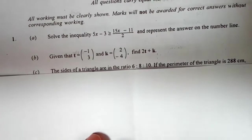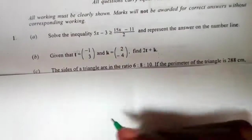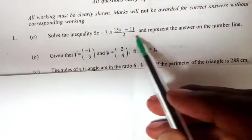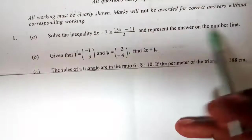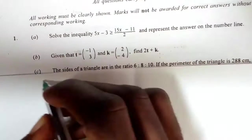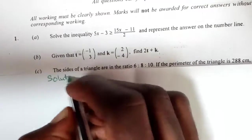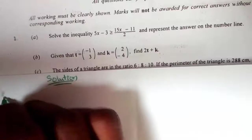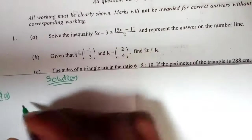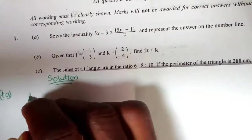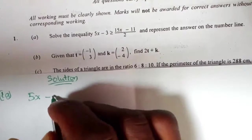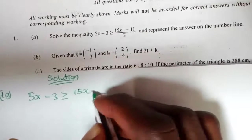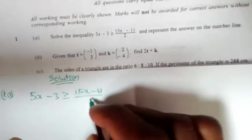BC 2018 question 1a: we are supposed to solve the inequality 5x minus 3 is greater than or equal to 15x minus 11 over 2, and represent our answer on the number line.